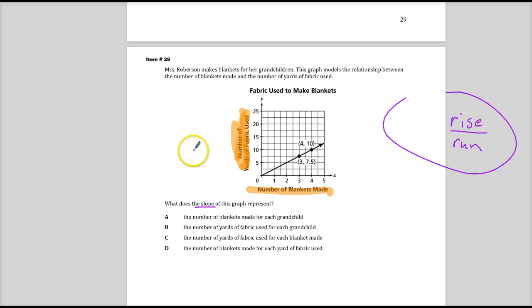Now, what does that mean for us? Well, the question just wants us to figure out what the slope means. So if I talk about what thing is increasing on the top versus what thing is increasing on the bottom, I'm in good shape. So let's look for the rise. The rise goes up and it says the number of yards of fabric used. So I'll put on top, yards of fabric.